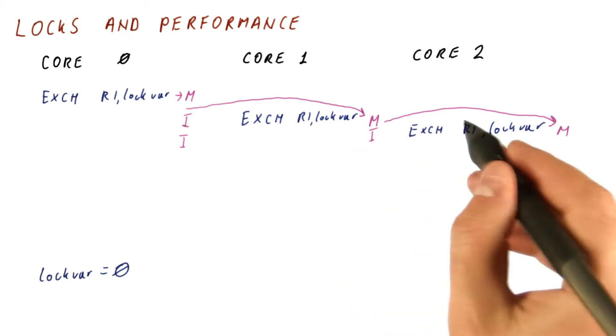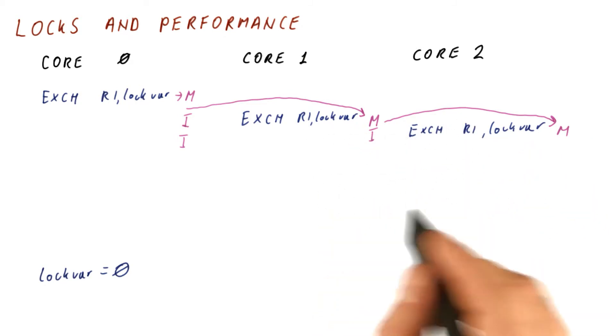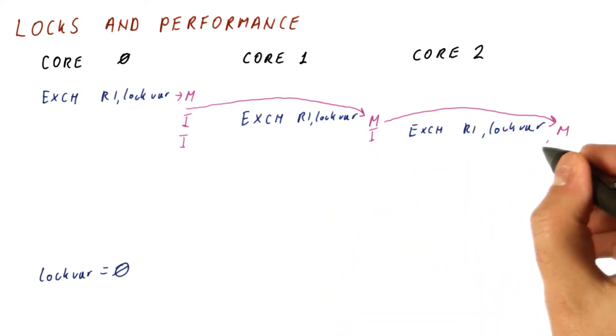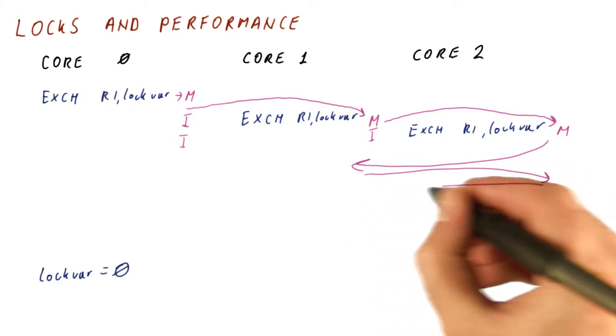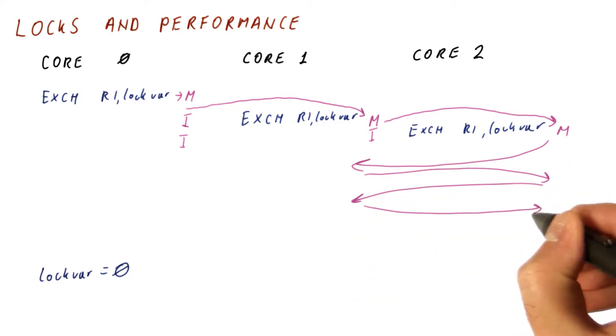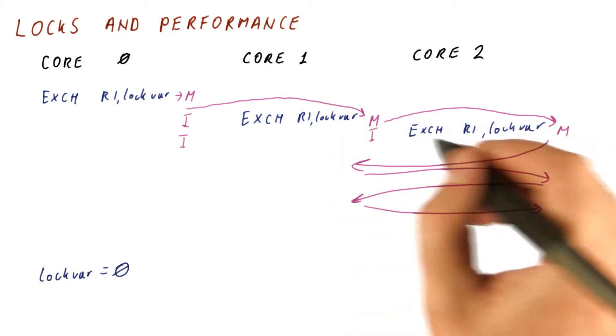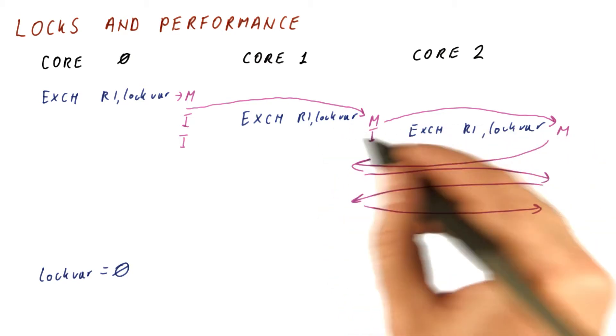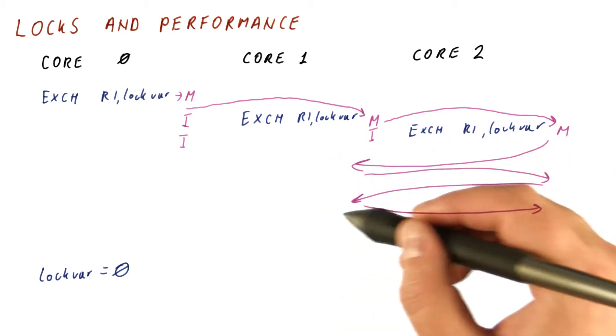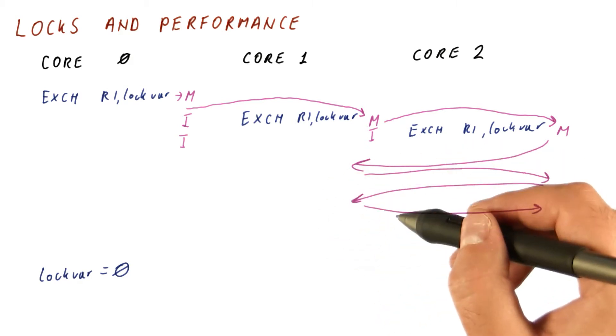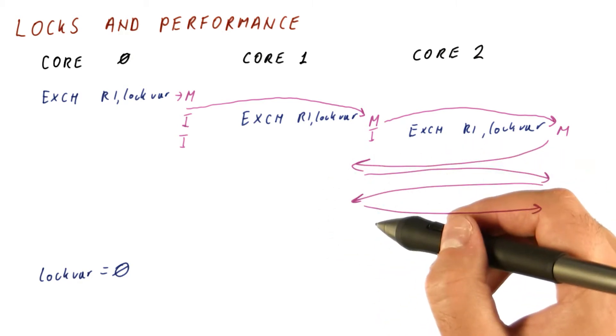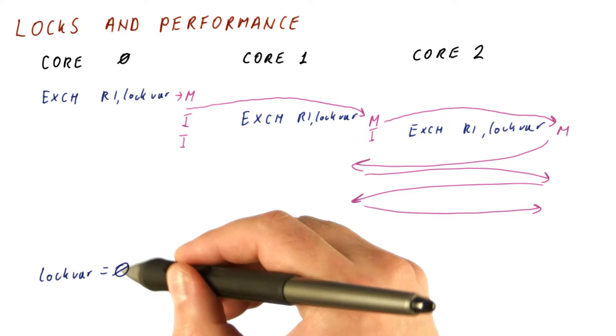And now, as long as the lock is busy, these two will be spinning in that loop. So what's going to happen is this block will move many, many times between their caches, each time causing communication on the shared bus, and each time spending a lot of power. None of this activity will actually succeed in grabbing the lock until the lock var becomes zero.